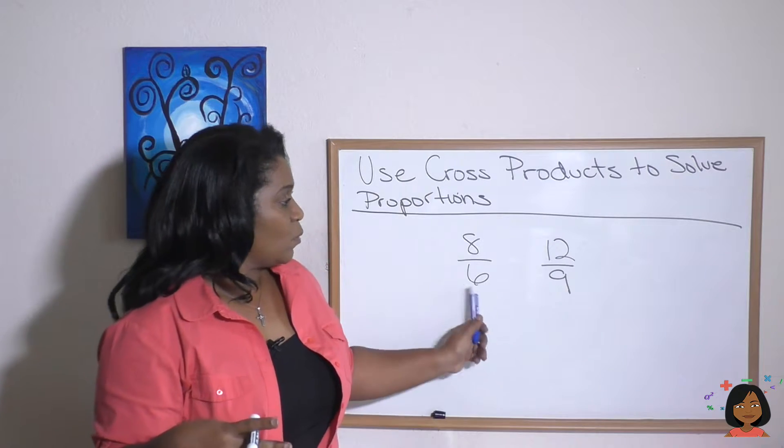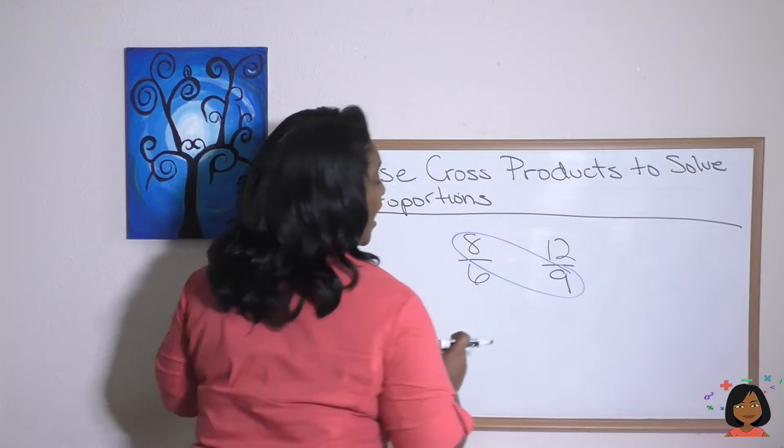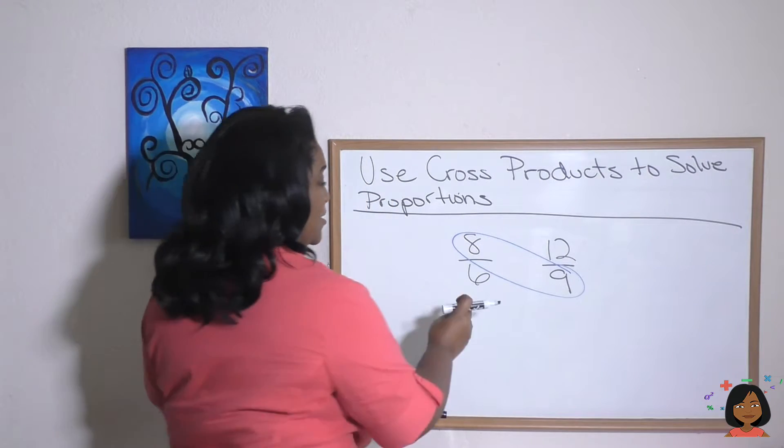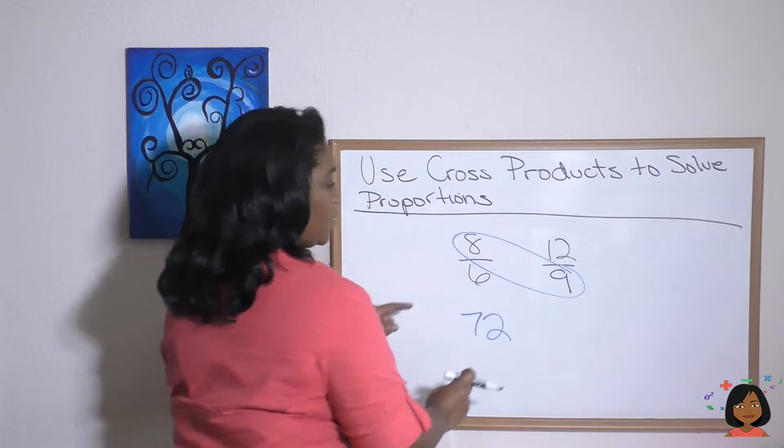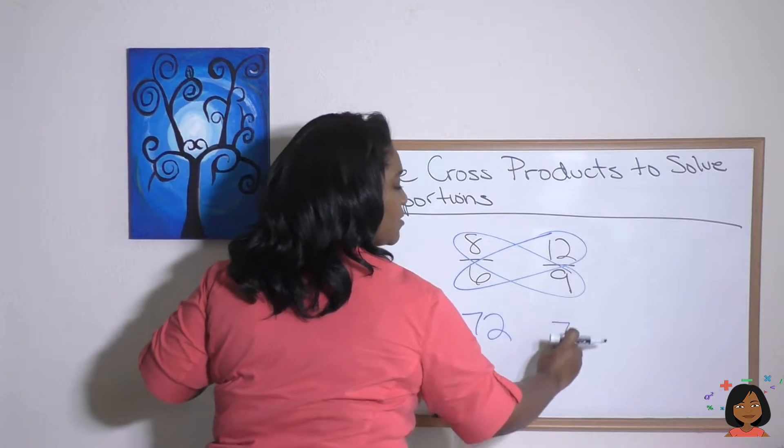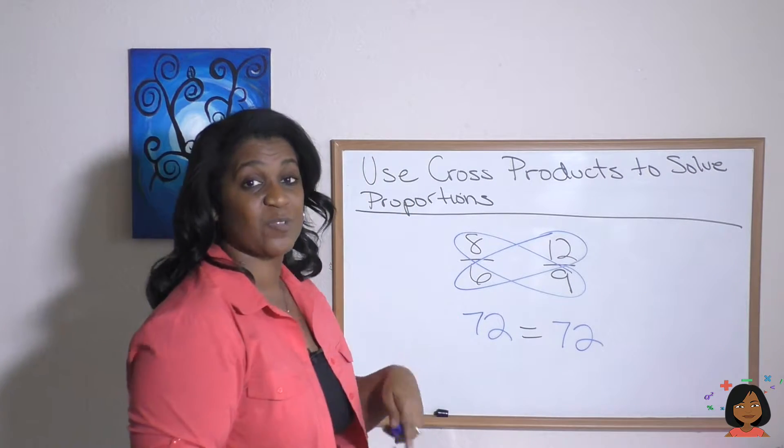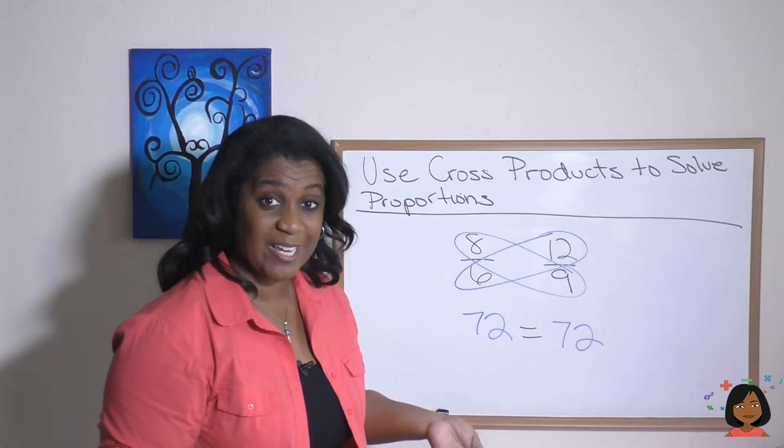So let's try doing the cross products. Nine times eight is 72, and 12 times six is also 72. So look at that, these equal. So cross products will tell you when proportions are equal.